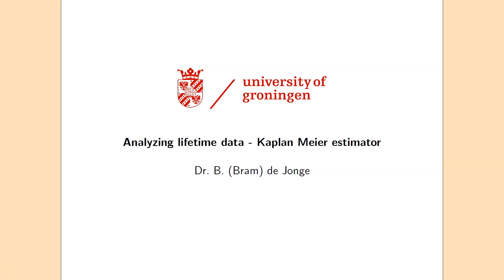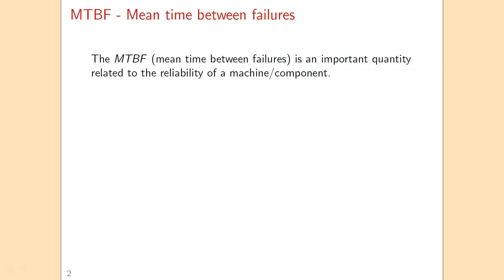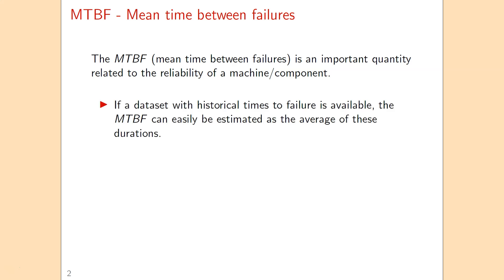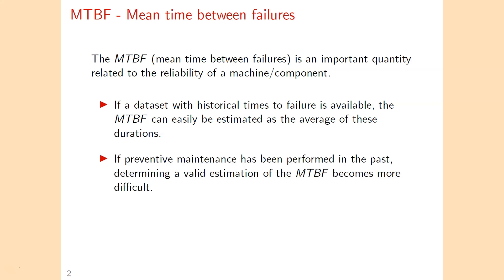This video is about analyzing lifetime data and the Kaplan-Meier estimator. The first thing we can calculate from a historical dataset is the mean time between failures for a machine. It is relatively easy to do if we have a dataset with only historical times until failure, because then we can just take the mean of those times until failure to get an estimate for the mean time between failures.